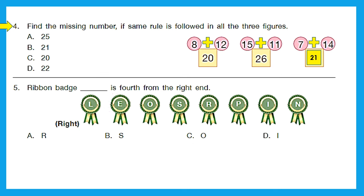So the right answer is option B, 21. Question 5: ribbon, band, bash — what is fourth from the right end? Let's find the right end and count: first, second, third, fourth — we got the fourth as S. So option B, S, is the right answer.